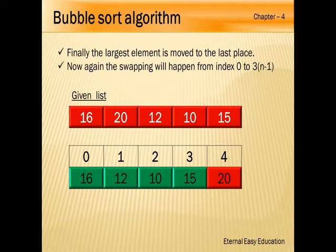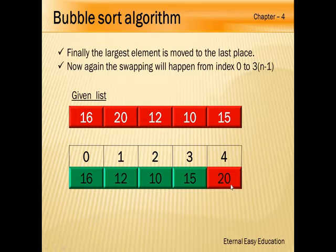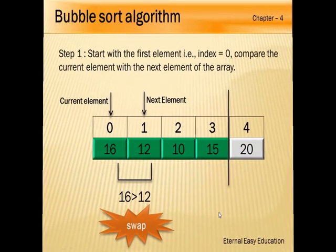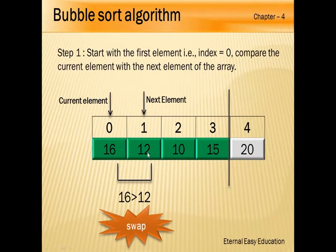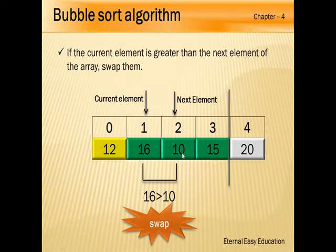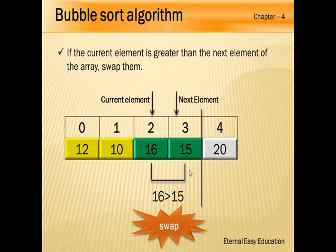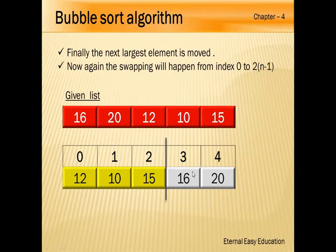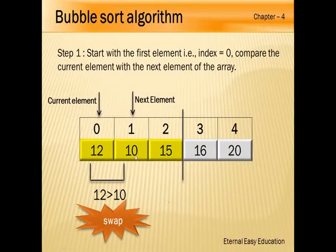The largest element, 20, is now at the last place. For the next iteration we only compare from index 0 to 3 (n minus 1), as 20 is fixed at the end. Compare the first and second elements: 16 and 12 — 12 is less, so swap. Compare 16 and 10 — 10 is less, so swap. Compare 16 and 15 — 15 is less, so swap. Now 20 and the next largest, 16, are in place.